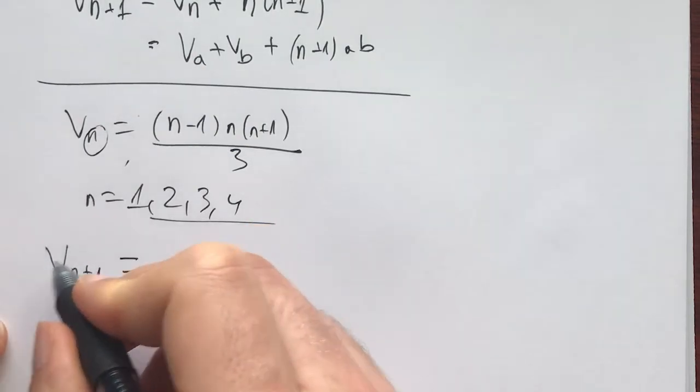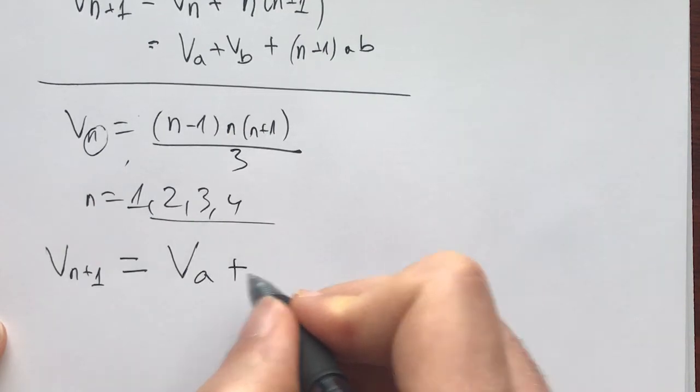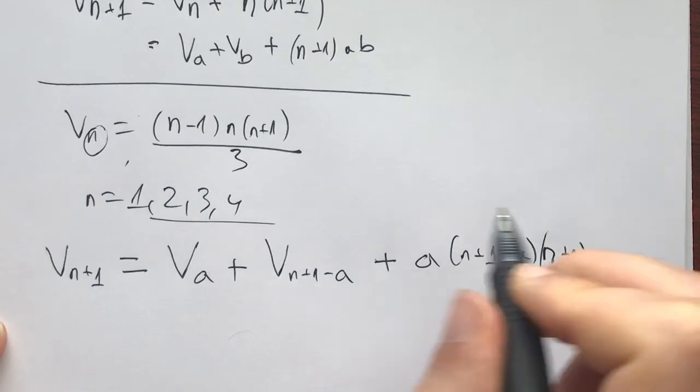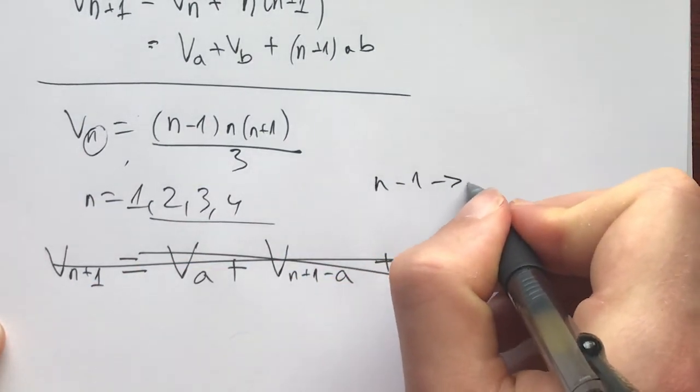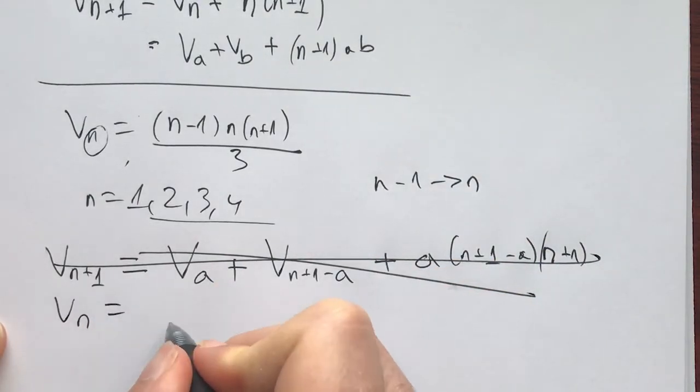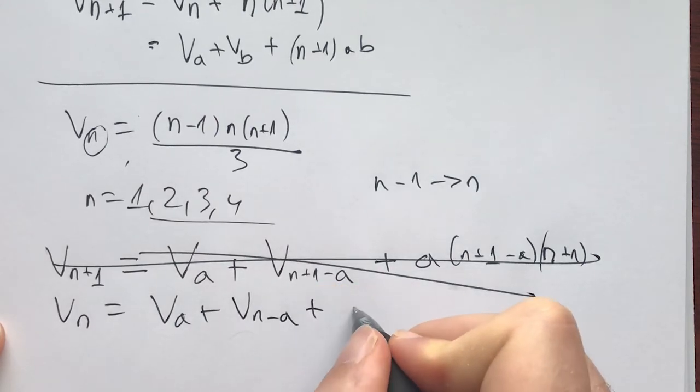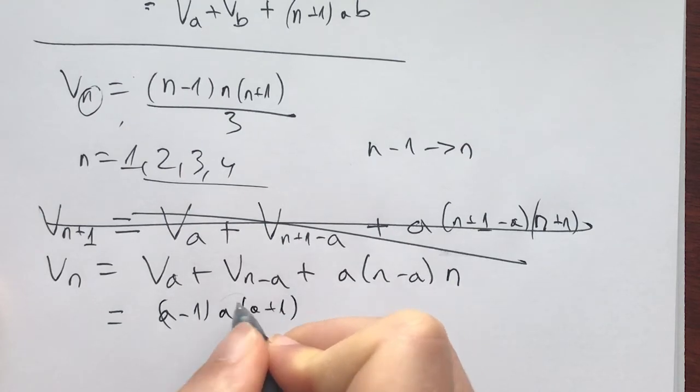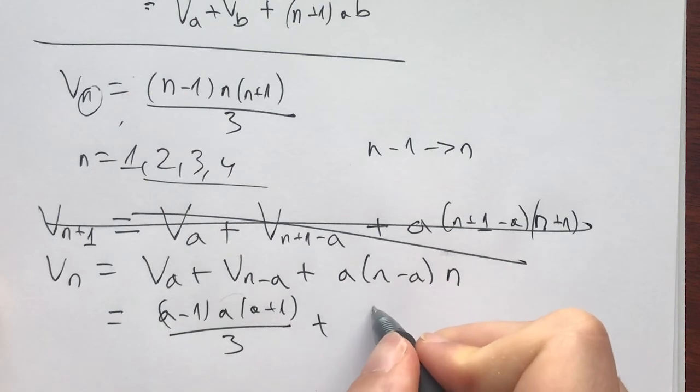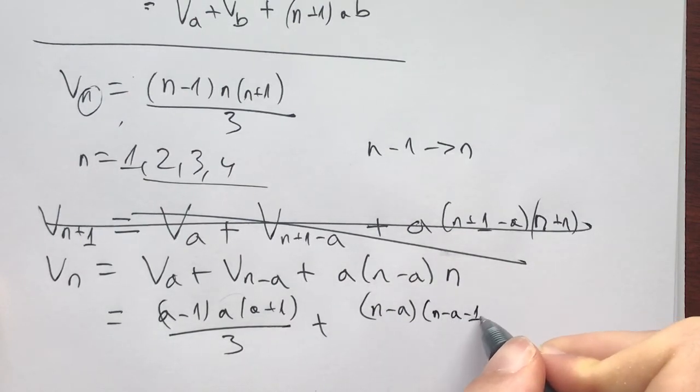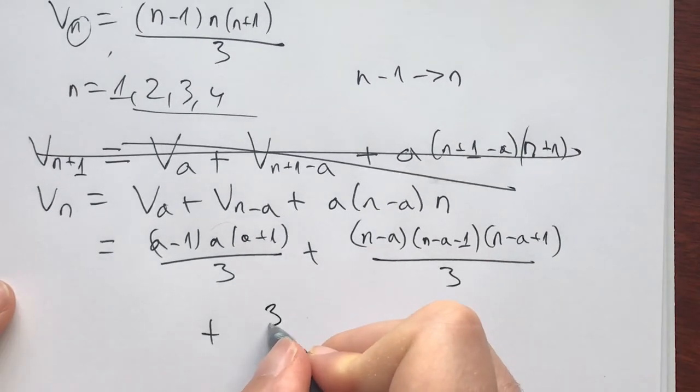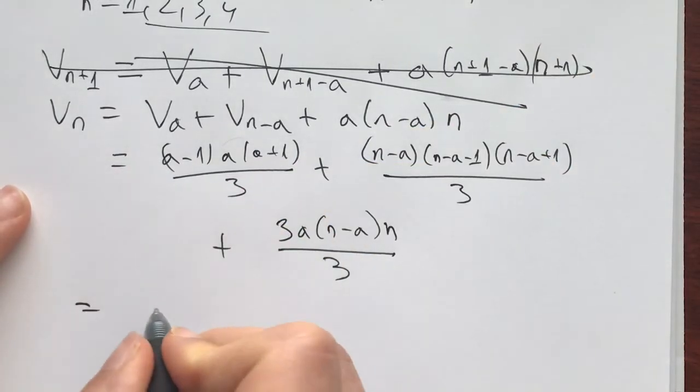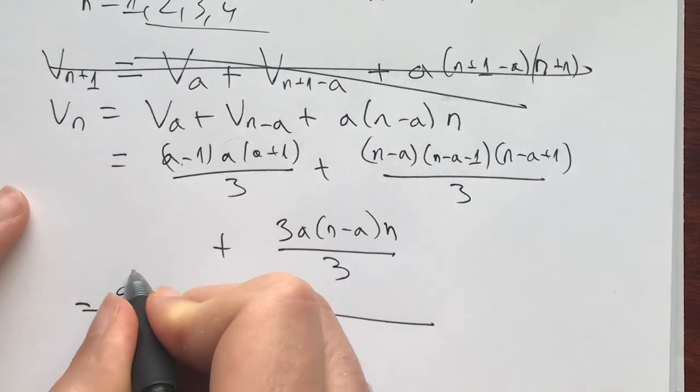And let's see what Vn plus 1 is. Well, if we break it into A and B, it's going to be Va plus, the B is going to be n plus 1 minus A, plus A times (n plus 1 minus A) times (n plus 1). Okay, maybe just for the algebra, let's go from n minus 1 till n, just so we have less things to multiply out here. So for Vn, it's going to be Va plus Vn minus A plus A times (n minus A) times n. And now what is this? (A minus 1) times A times (A plus 1) by strong induction over 3 plus (n minus A) times (n minus A minus 1) times (n minus A plus 1) over 3 plus 3*A*(n minus A)*n over 3. And now for this, the thing we need to do is a bunch of algebra and namely multiply everything out. So what do we have? This is A cubed minus A. I mean, everything is actually x cubed minus x. So this is (n minus A) cubed minus (n minus A). And this thing here is plus 3 times A times (n minus A) times n.